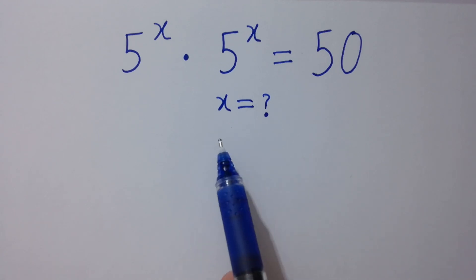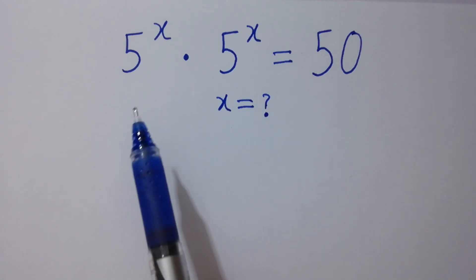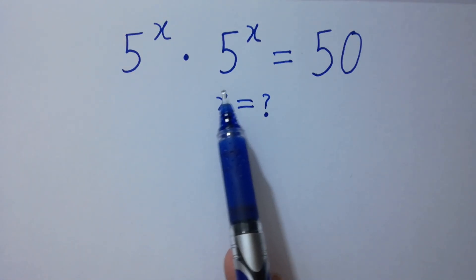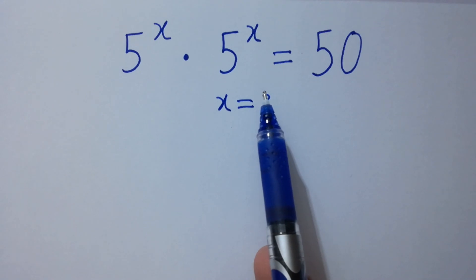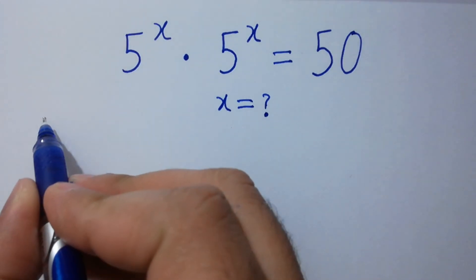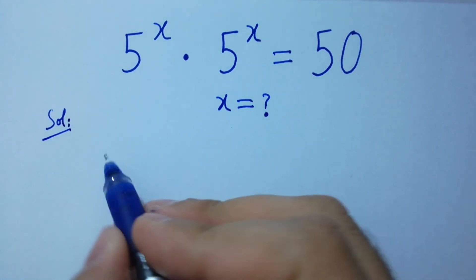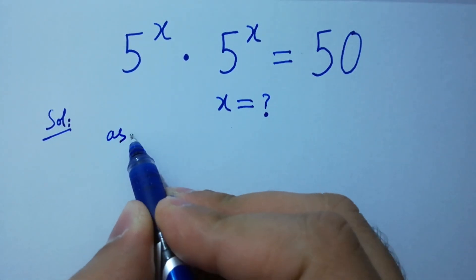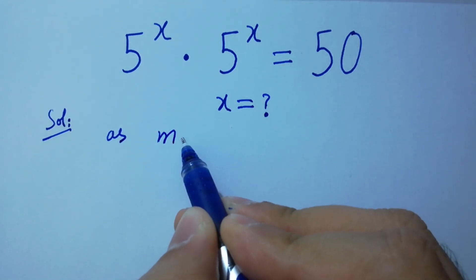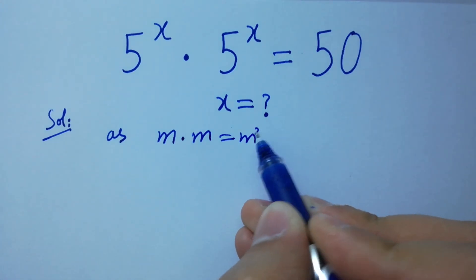Hello friends, find the value of x if 5 to the power x times 5 to the power x equals 50. Let's have a solution. As we know, m times m equals m squared.